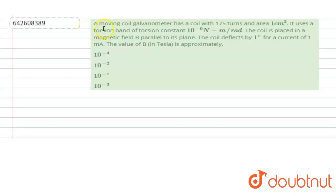Hello, the problem states that a moving coil galvanometer has coil with 175 turns and area is 1 centimeter square. It uses a torsion band of torsion constant 10 to the power minus 6 newton meter per radian. The coil is placed in a magnetic field B parallel to its plane. The coil is deflected by 1 degree for a current of 1 milliampere.